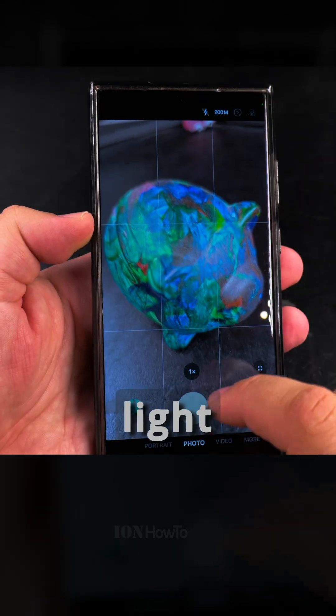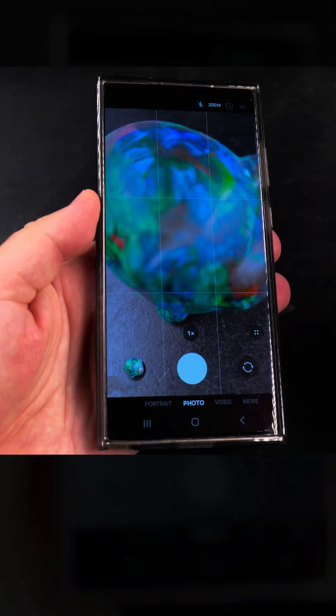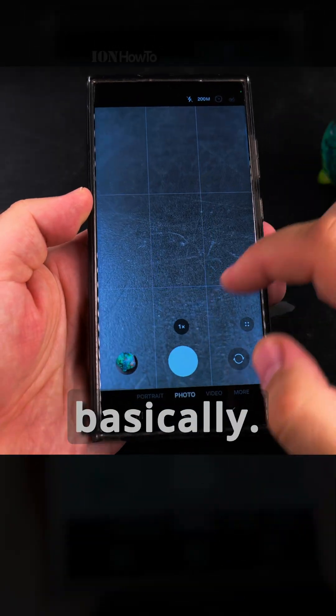In the 200 megapixel mode, it's telling you that you need better light. In general, the more megapixels you have, you need to use it in bright daylight.